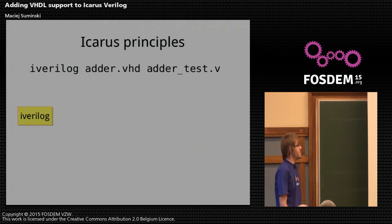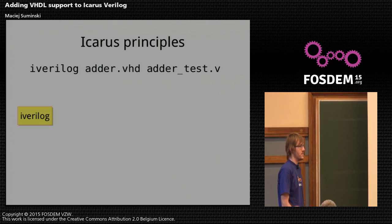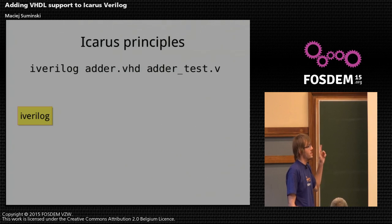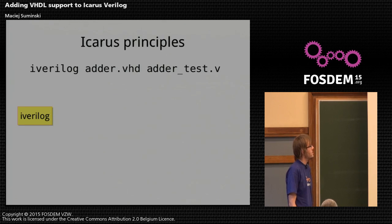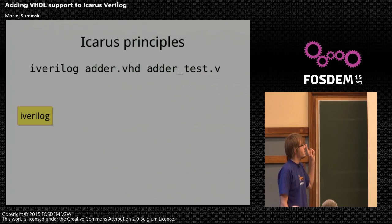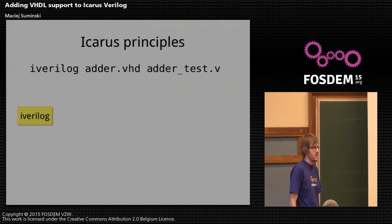Before we start talking about extending the software, a brief introduction might be helpful. Icarus consists of a few smaller programs. Let's say we would like to simulate an adder written in VHDL together with a test bench given in SystemVerilog or Verilog. To do so, we issue a command like the one on the top of the screen. Iverilog is the entry point — a convenient tool that handles input parameters and configuration files and also passes data between further stages of processing.